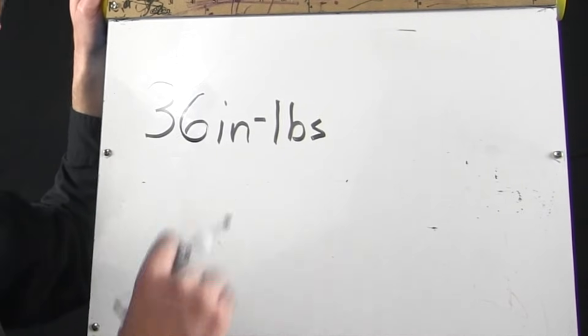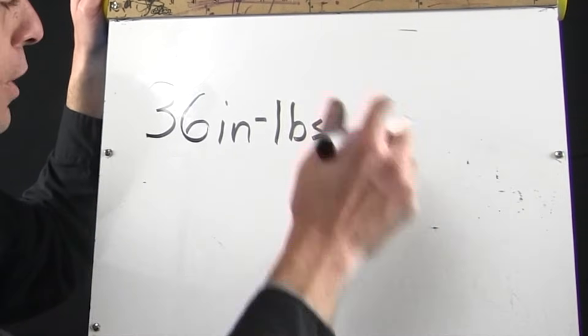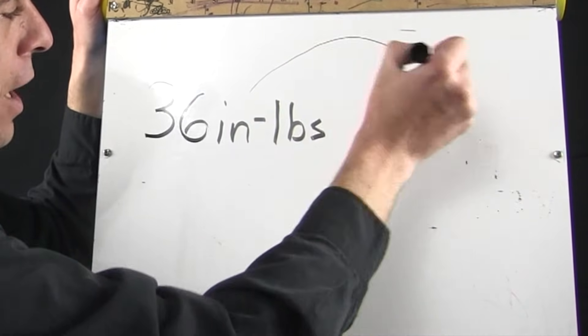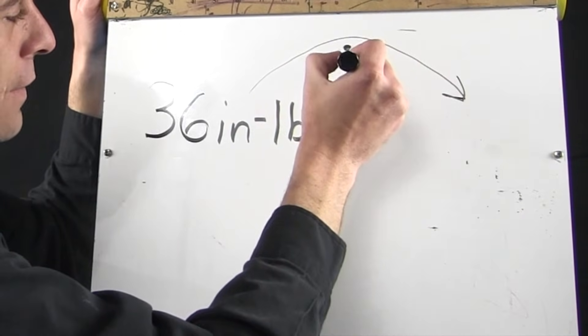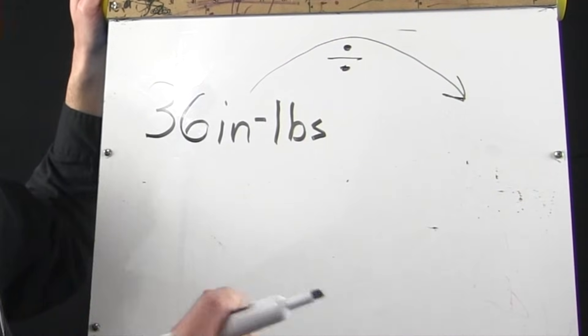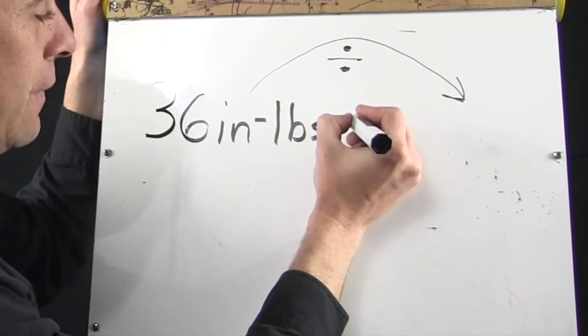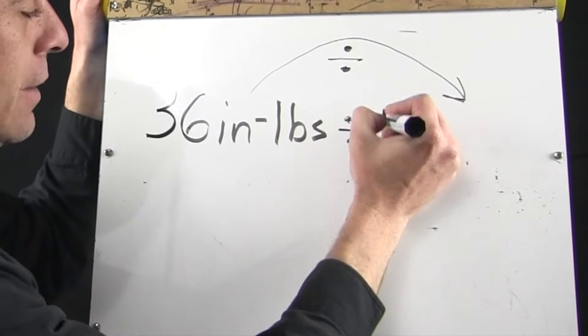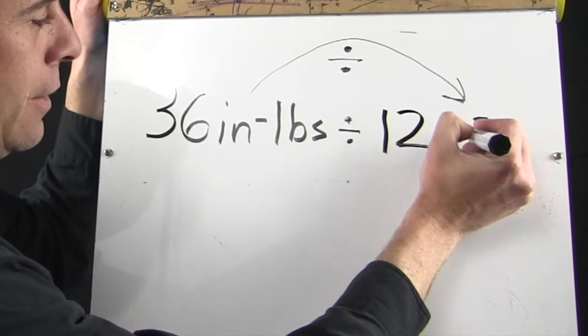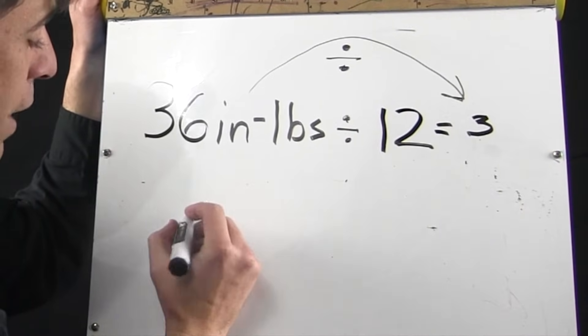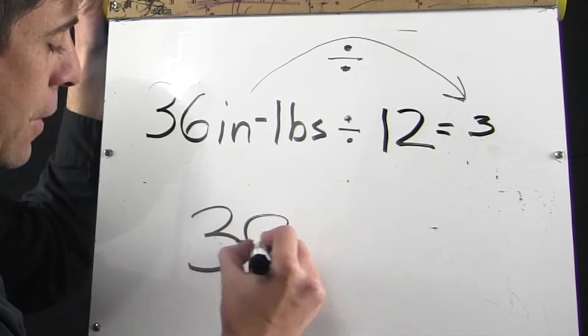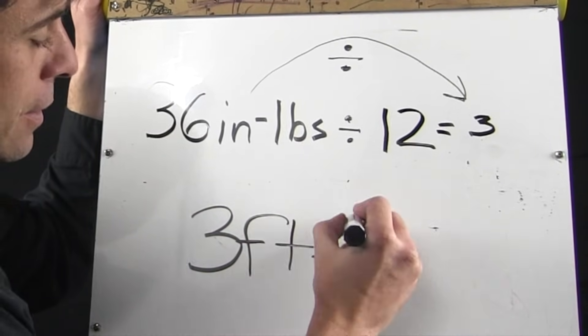So 36 inch-pounds, and when we're going to foot-pounds, remember, we divide. What's our constant? Our constant is always 12. So we're going to divide 36 by 12, and our answer will be 3. So what we have is 3 foot-pounds.